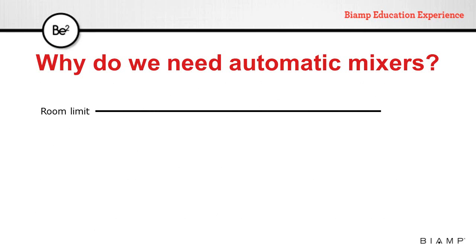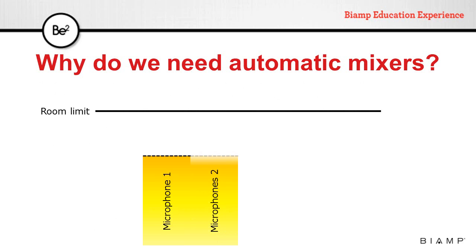For instance, let's suppose we have a room limit — this is the feedback level of a room. If we put in one microphone, we might not get feedback because the level may be below the limit. If we add a second microphone and mix those two together, we gain 3 dB, so our output level is going to be much higher than each individual microphone.